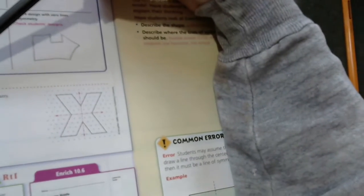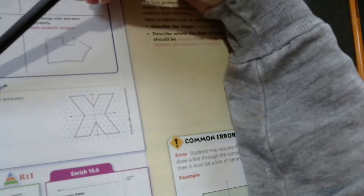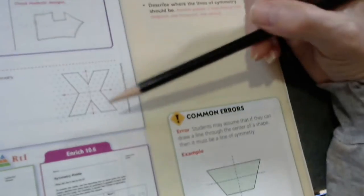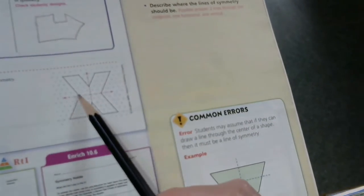Our Share and Show says, the shape at the right has line symmetry. Draw the two lines of symmetry. And they have one going straight up and straight across for your line of symmetry.